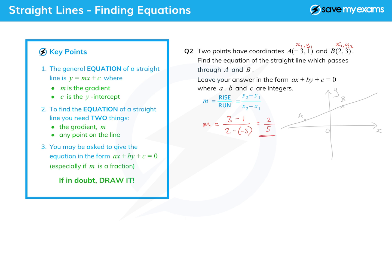Okay, so the gradient is 2 fifths, and now we have the gradient m and we have a point on the line—in fact we've got two points on the line, so we can use either of those. So let's write down the equation of the line in classic y equals mx plus c form. It's y equals two fifths x plus c, and we've got to find c, and we have a choice: we can either use the point A or we can use the point B.